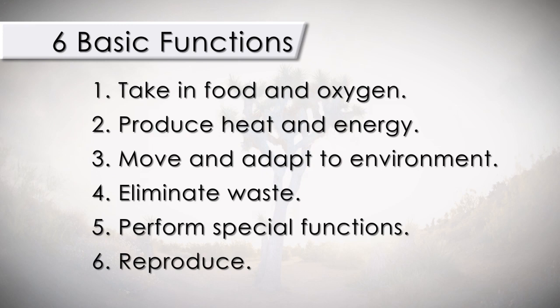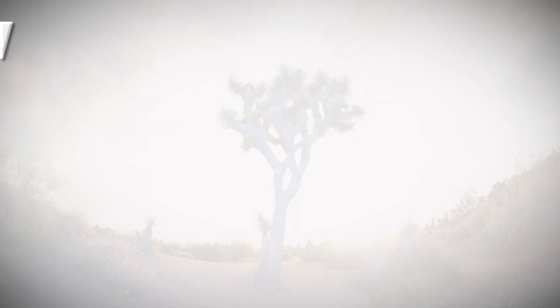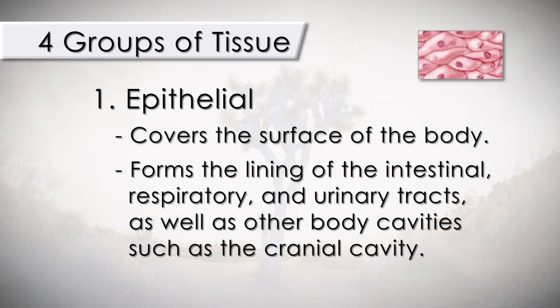The next step in the formation of the human organism is that like cells join to form tissue. There are four main groups of tissues. The epithelial covers the surface of the body. It forms the lining of the intestinal, respiratory, and urinary tracts, as well as other body cavities such as the cranial cavity. Its main function is to secrete and protect.